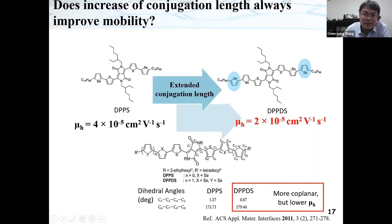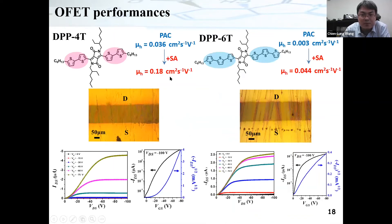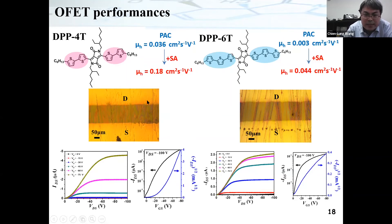So we started to study this system. In our lab, we synthesized two DA molecules where the only difference is the conjugation length. Using our PDMS-assisted crystallization method, we found that both molecules can grow into well-oriented crystal arrays. But no matter how hard we tried to optimize the performance of the longer-conjugation-length molecule, we could not get higher mobility than the shorter one.